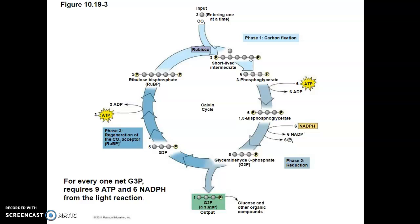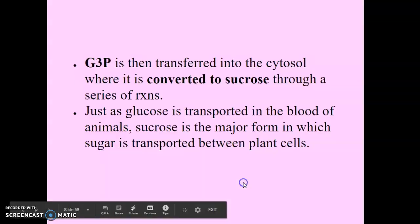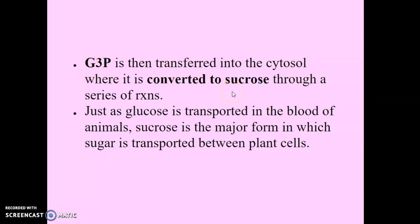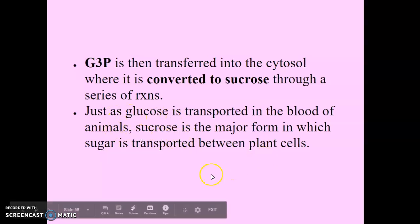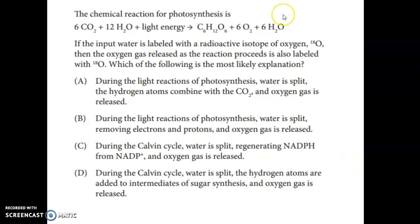G3P is transferred into the cytosol where it's converted into sucrose through various reactions, which are beyond the scope of the AP exam. As an analogy, just as glucose is transported in the blood of animals, sucrose is the major form in which sugar is transported between plant cells. Think: glucose for animals, sucrose for plants.